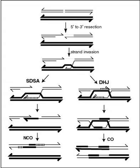In gene conversion, a section of genetic material is copied from one chromosome to another without the donating chromosome being changed. Gene conversion occurs at high frequency at the actual site of the recombination event during meiosis. It is a process by which a DNA sequence is copied from one DNA helix to another DNA helix, whose sequence is altered. Gene conversion has often been studied in fungal crosses where the four products of individual meiosis can be conveniently observed. Gene conversion events can be distinguished as deviations in an individual meiosis from the normal 2–2 segregation pattern.